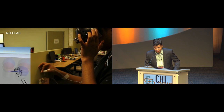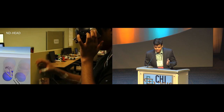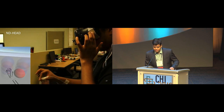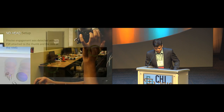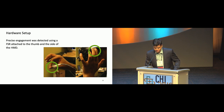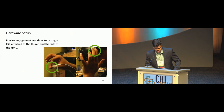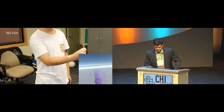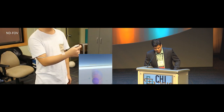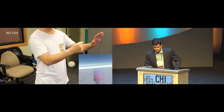In the non-dominant head technique, a force-sensitive resistor was taped onto the side of the head-mounted display, and the user has to press it in order to switch the mode. We also used the force-sensitive resistor for precisely detecting when the line drawing task started. The last technique is non-dominant field of view - by simply bringing the non-dominant hand into the field of view, the mode would be switched.